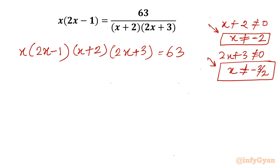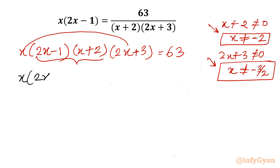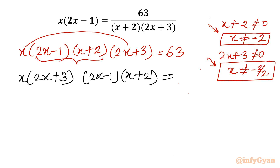Now I will consider the product method. I will group x with (2x plus 3) as one product, and (2x minus 1) with (x plus 2) as another product, so the equation becomes: x times (2x plus 3) times (2x minus 1) times (x plus 2) equal to 63.